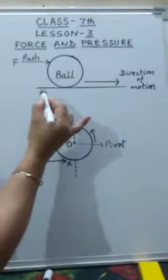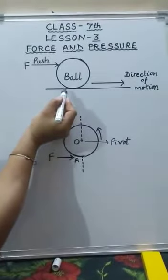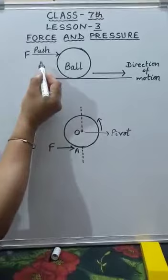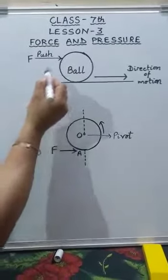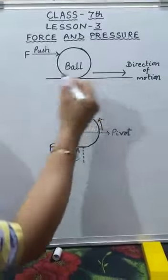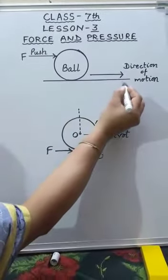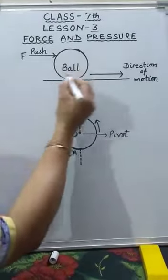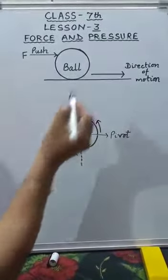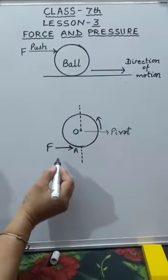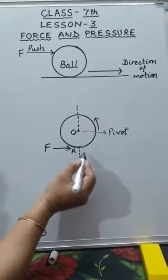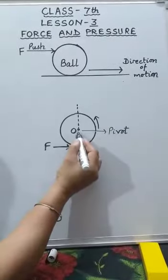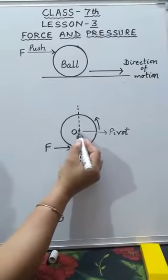Today I will tell you about the turning effect of force. Suppose there is a stationary rigid body like a ball lying on the ground. If I apply force on the ball, it will start moving in the direction in which the force is applied. Now suppose another body is there but it is not free to move — it is pivoted at a point O. Pivoted means fixed at a point O.